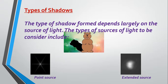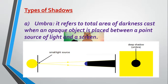The first type of shadow is called umbra. Umbra refers to the total area of darkness cast when an opaque object is placed between a point source of light and a screen. Key terms in the definition: total or complete area of darkness, opaque object, placed between a point source of light, and a screen.